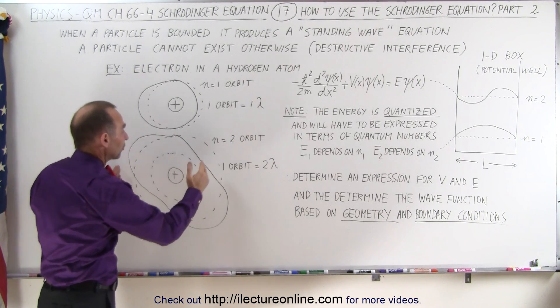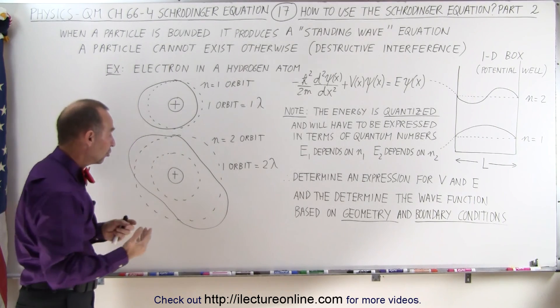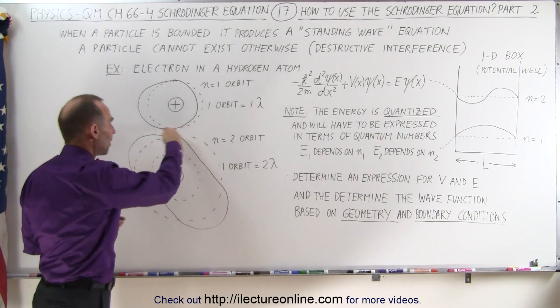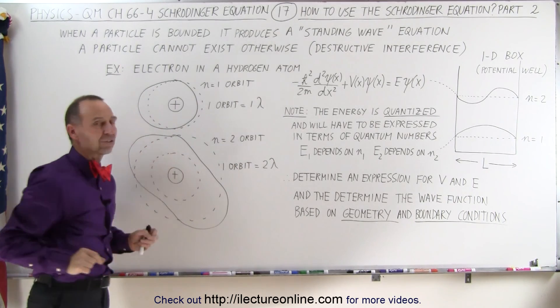If an electron moves on to the second energy level where n equals 2, then it shows that the distance traveling around the nucleus, one orbit, will equal two wavelengths of that particle.